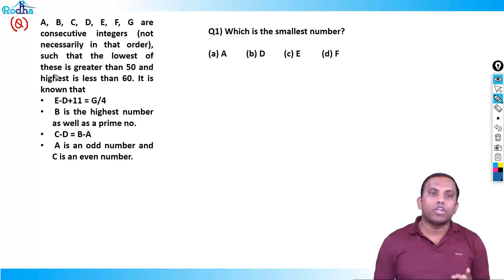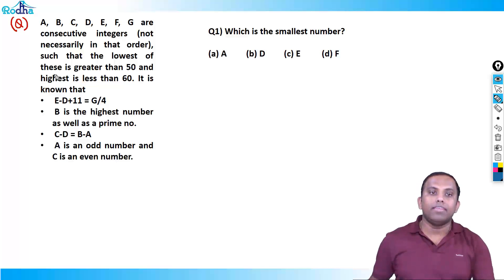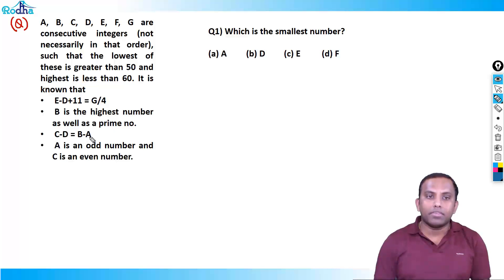So this is the set: A, B, C, D, E, F, G are consecutive integers, not necessarily in order, such that the lowest is greater than 50 and the highest is less than 60. It is known that E minus D plus 11 equals G divided by 4. B is the highest number as well as a prime number. C minus D equals B minus A, and A is an odd number and C is an even number.